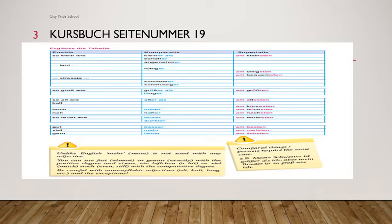Then the irregular forms: gut — besser — am besten, which is absolutely different. Viel — mehr — am meisten. Gern — lieber — am liebsten. Please remember and learn the table so that it becomes easier to solve the exercises based on degrees of comparison.